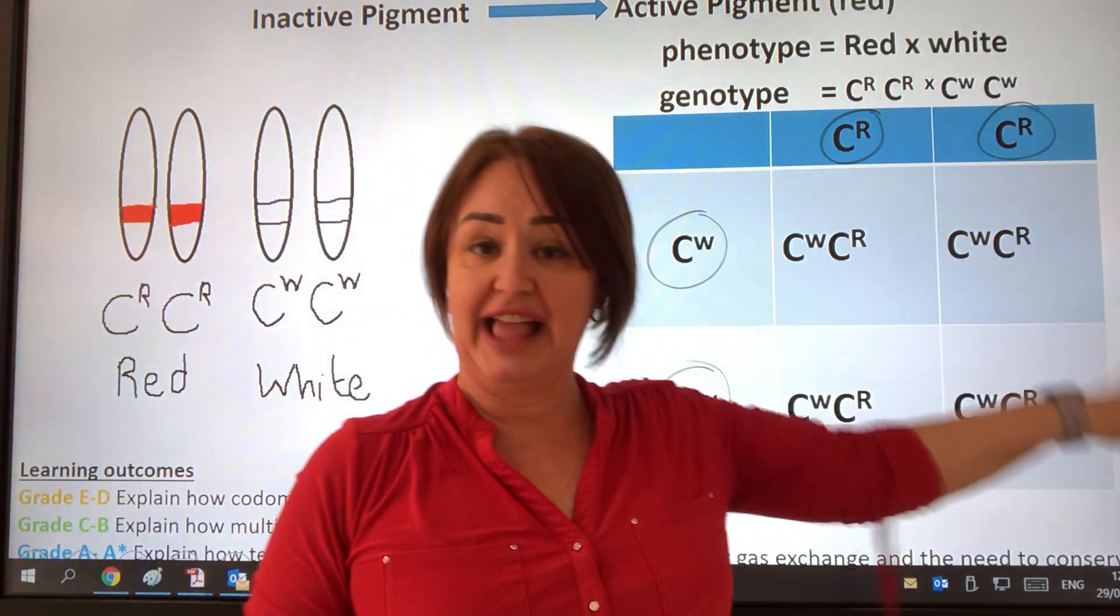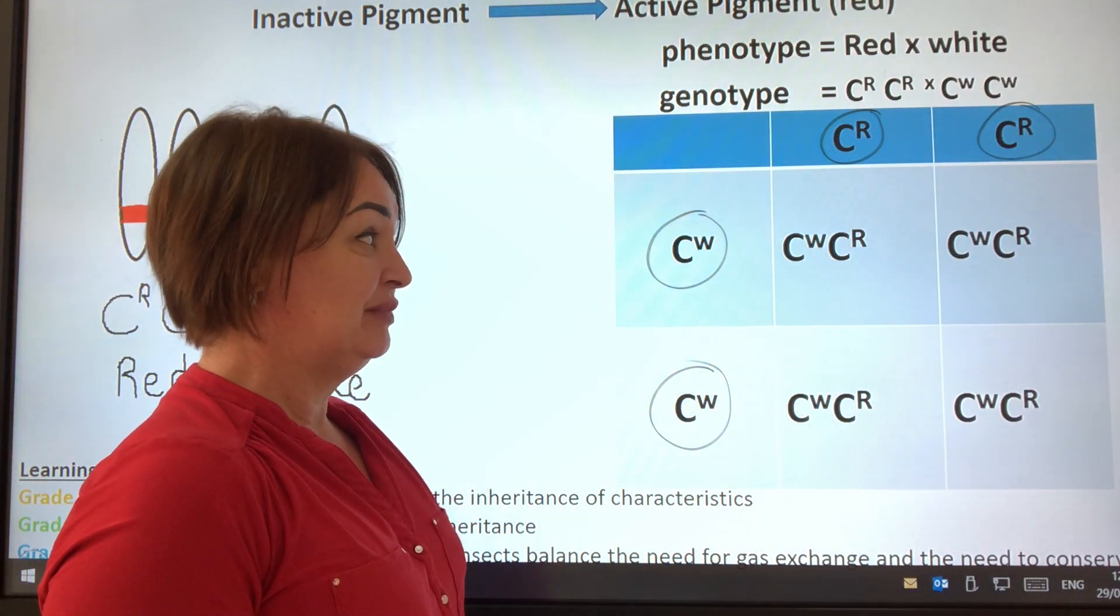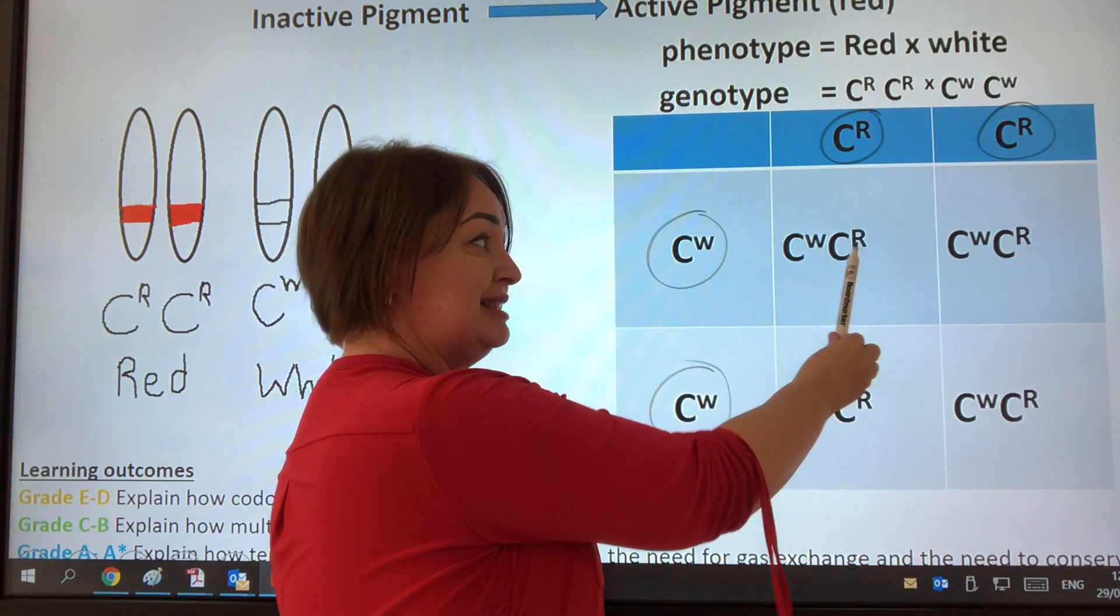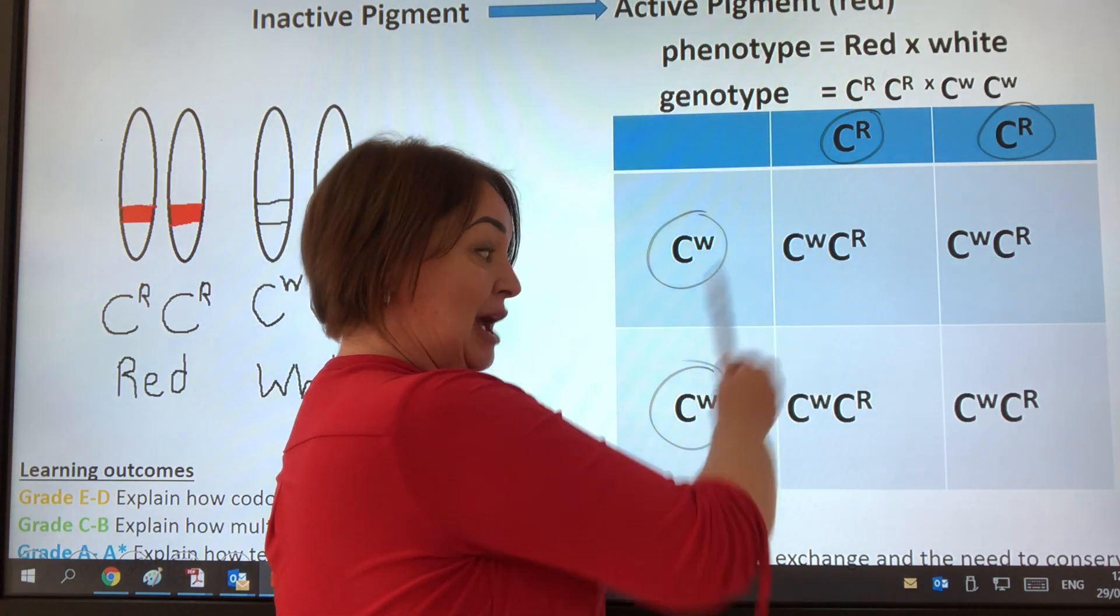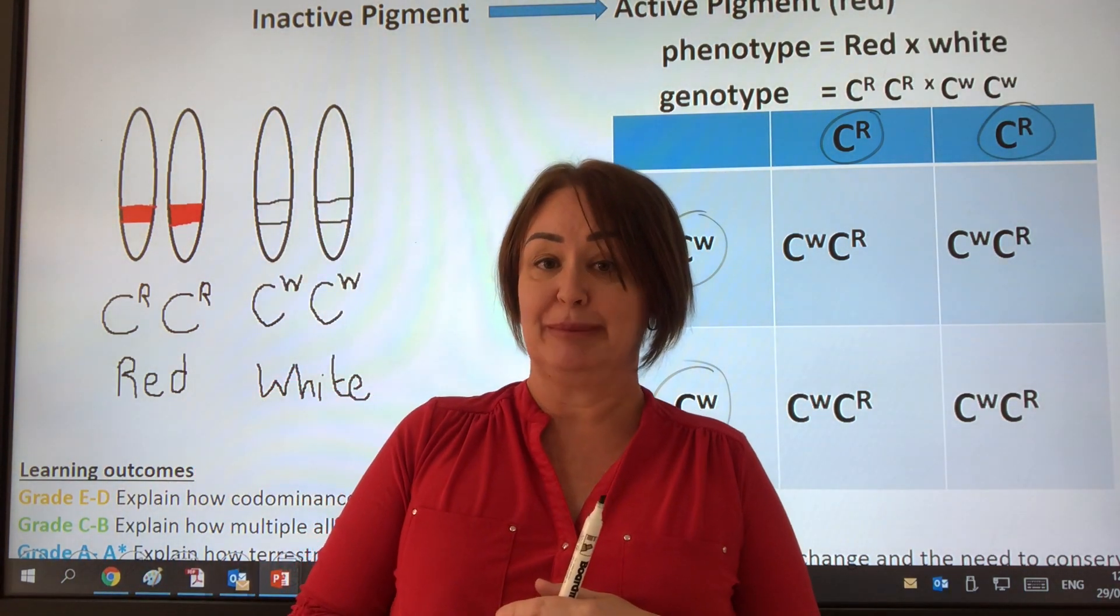When we cross those, all of the F1 offspring are going to be exactly the same. They are going to be pink, because both the enzyme will be expressed and the effect of no enzyme will be expressed. So all the F1 generation are going to be pink.